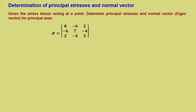In this lecture, we will try to see a small example demonstrating this. We are discussing about determination of principal stresses and normal vectors. Given a stress tensor acting at a point — sigma — with its components given, we are asked to determine the principal stresses and the normal vectors, that is eigenvectors, for the specific principal axes.